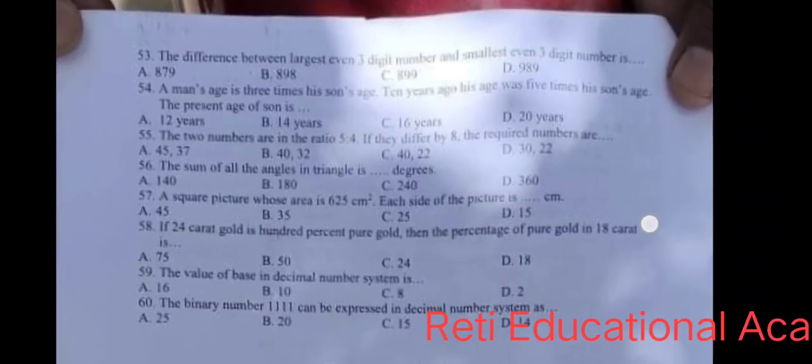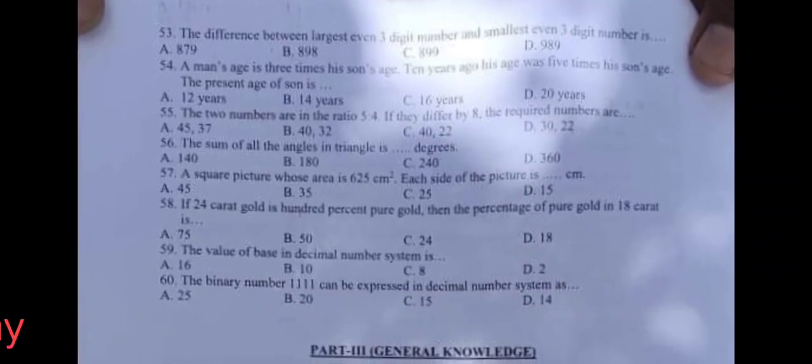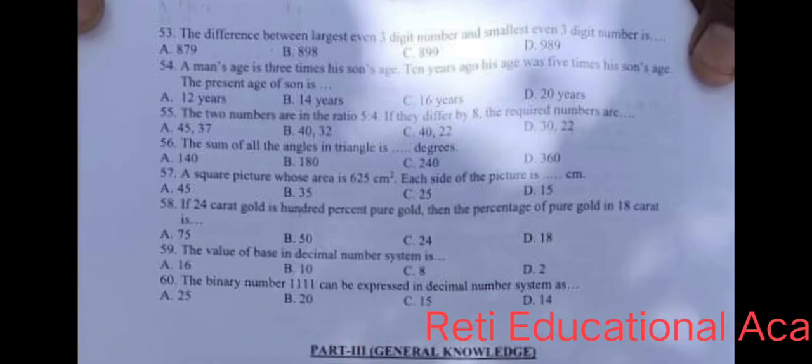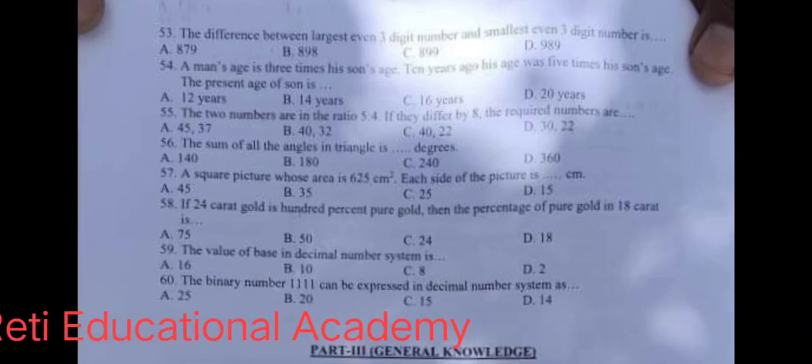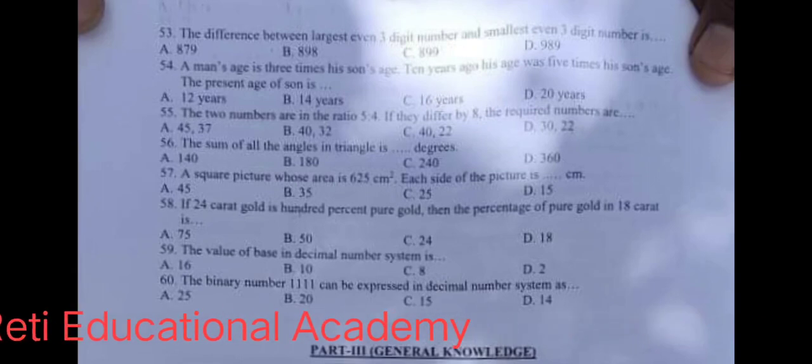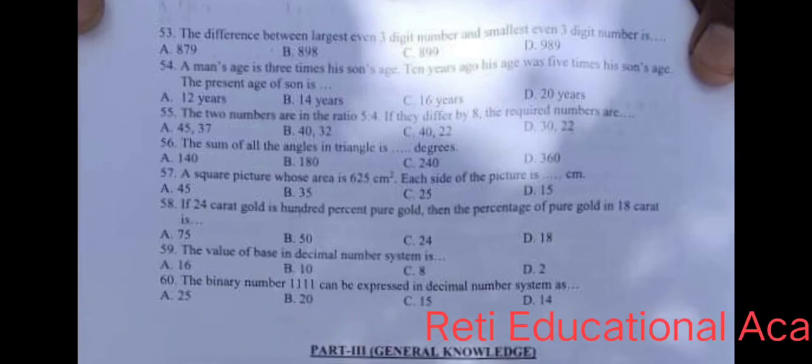Question number 53: The difference between largest even three digit number and smallest even three digit number is. The correct answer is B, 898.